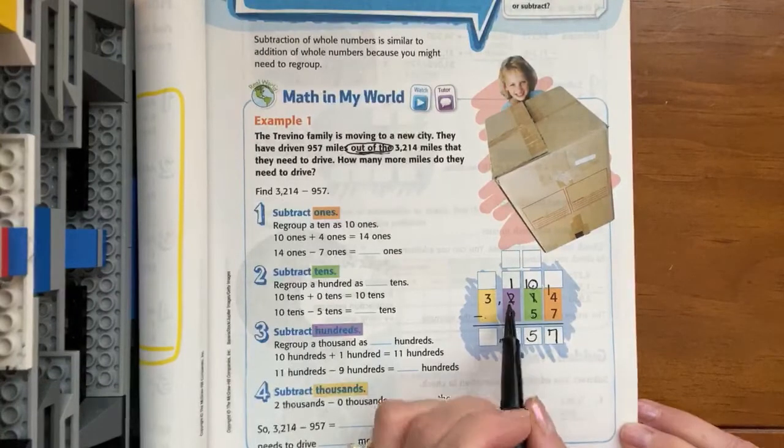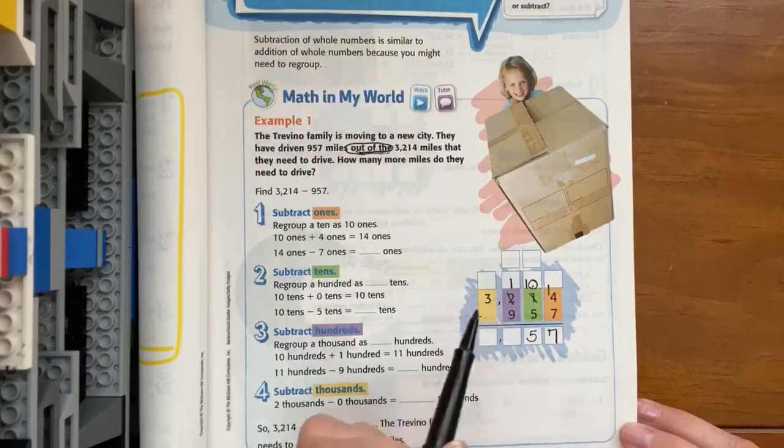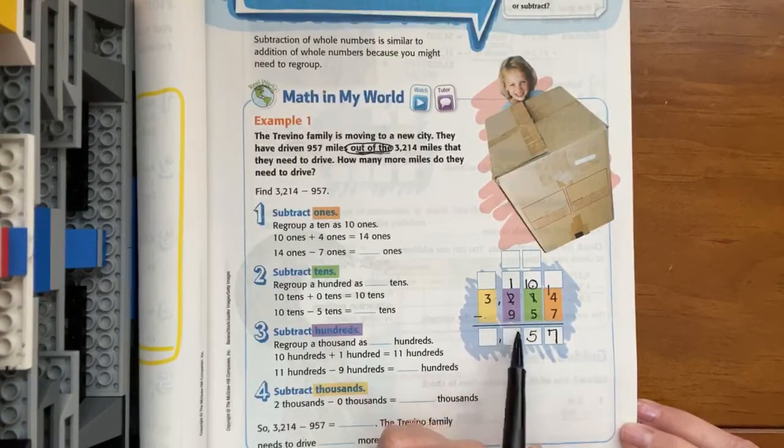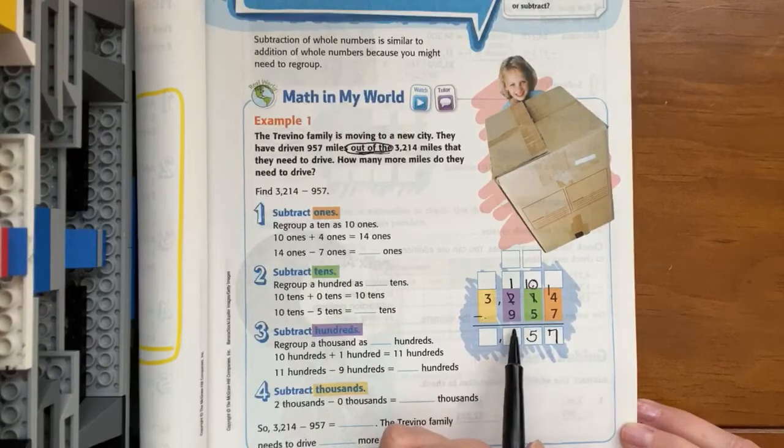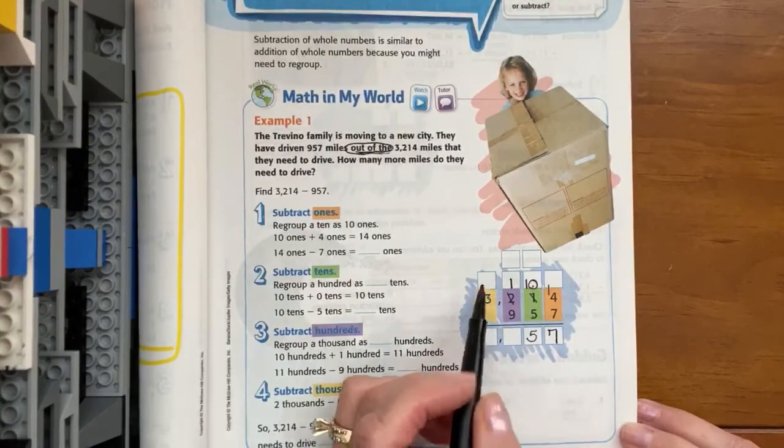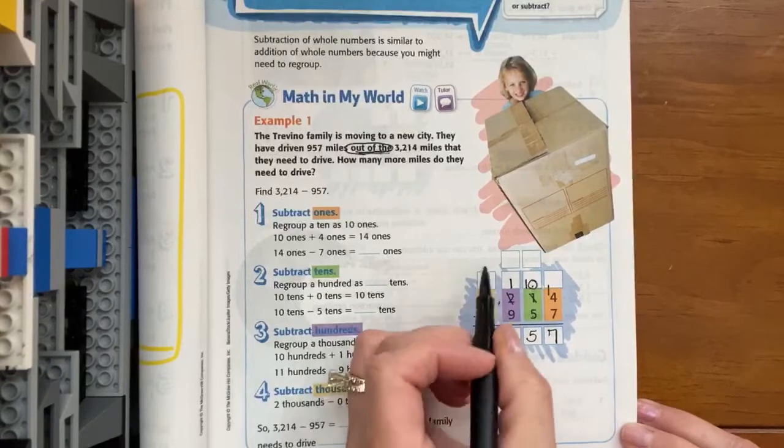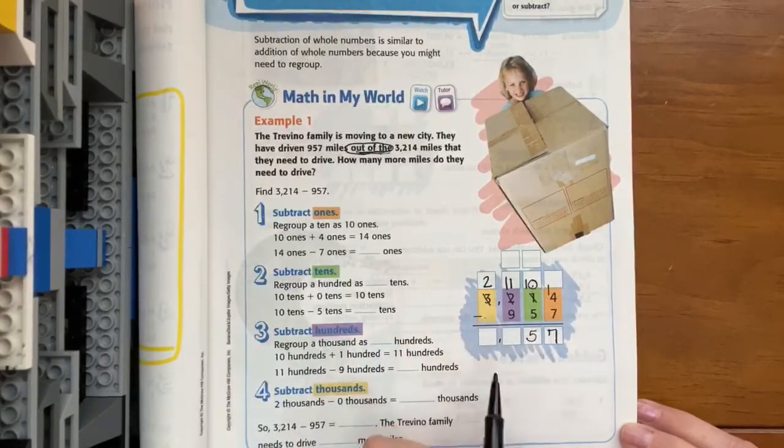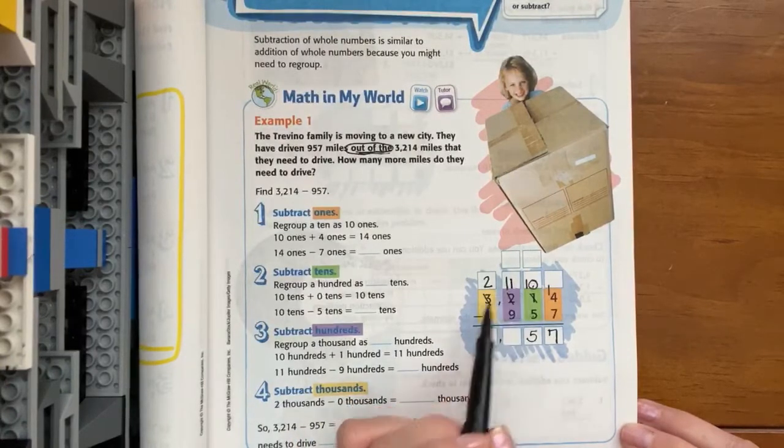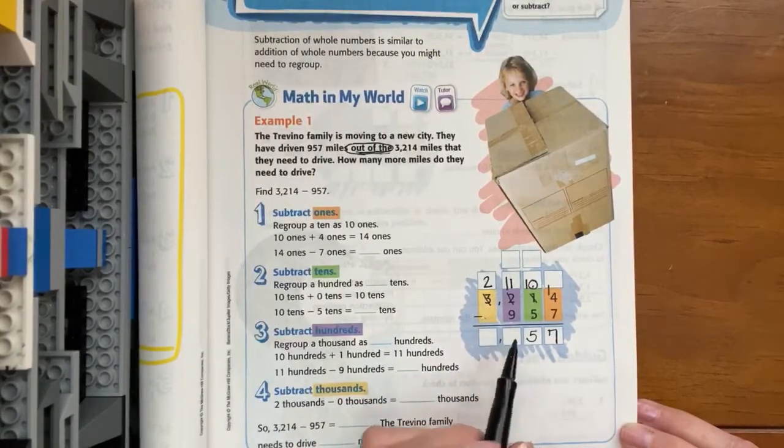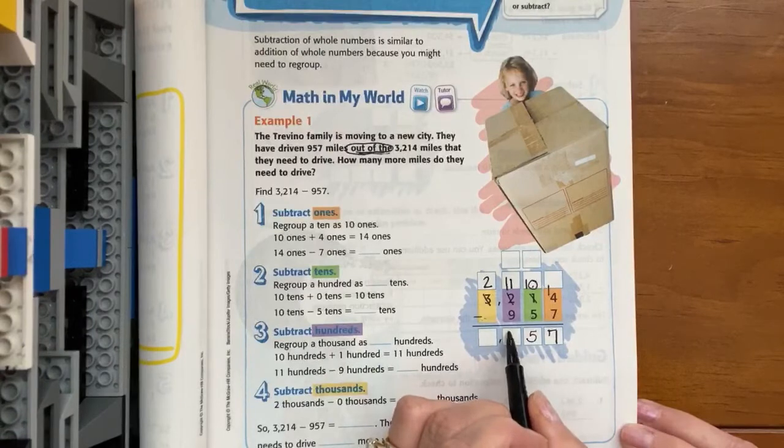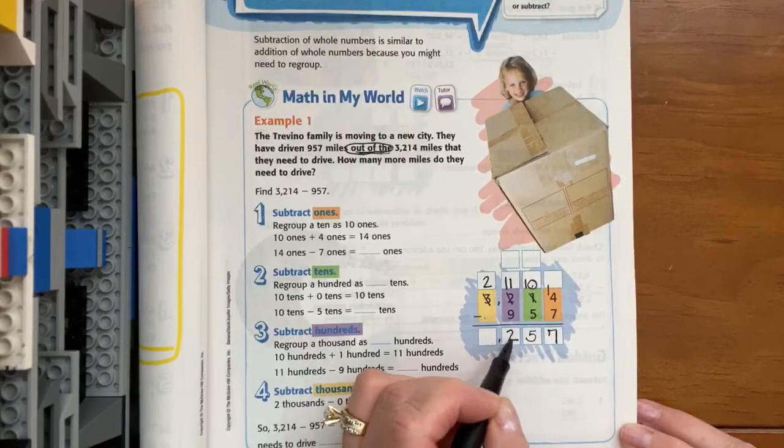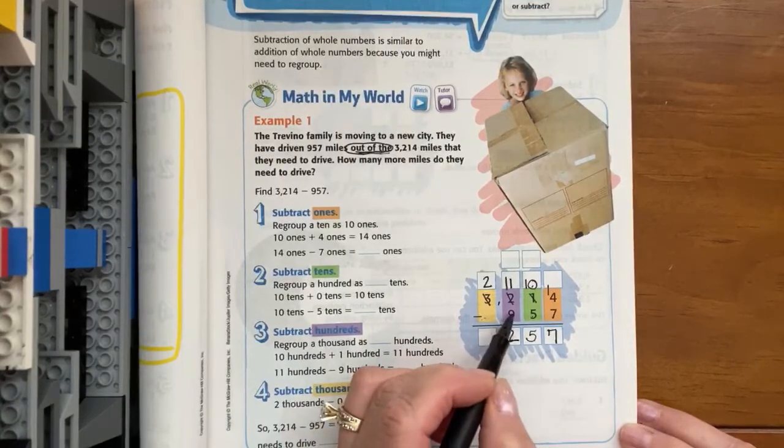So now let's move to the hundreds. We have one group of a hundred and we're going to take nine groups of a hundred away and that's impossible. So we're going to go to the thousands and we're going to take a group of a thousand. So we're going to leave two groups of a thousand there and we're going to move it right there. So now we have 11 minus nine.